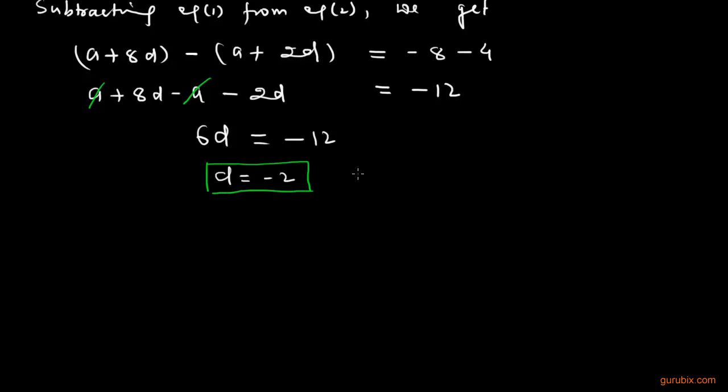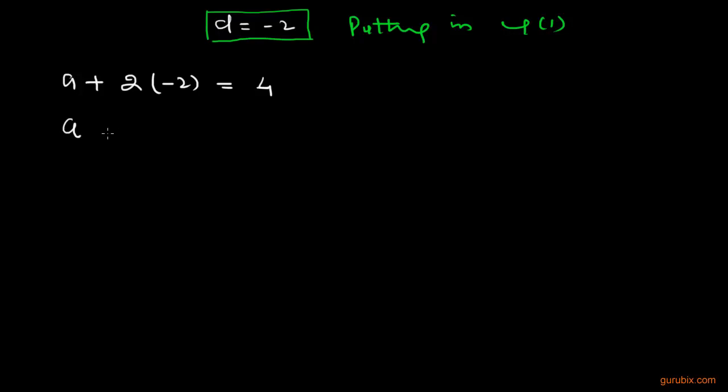So now we shall put this value in equation number 1. So we write putting in equation 1. And equation 1 is A plus 2D, and the value of D is minus 2, and that is equal to 4. And calculating this value, we get A equals to 8. Therefore, the first term A equals to 8.